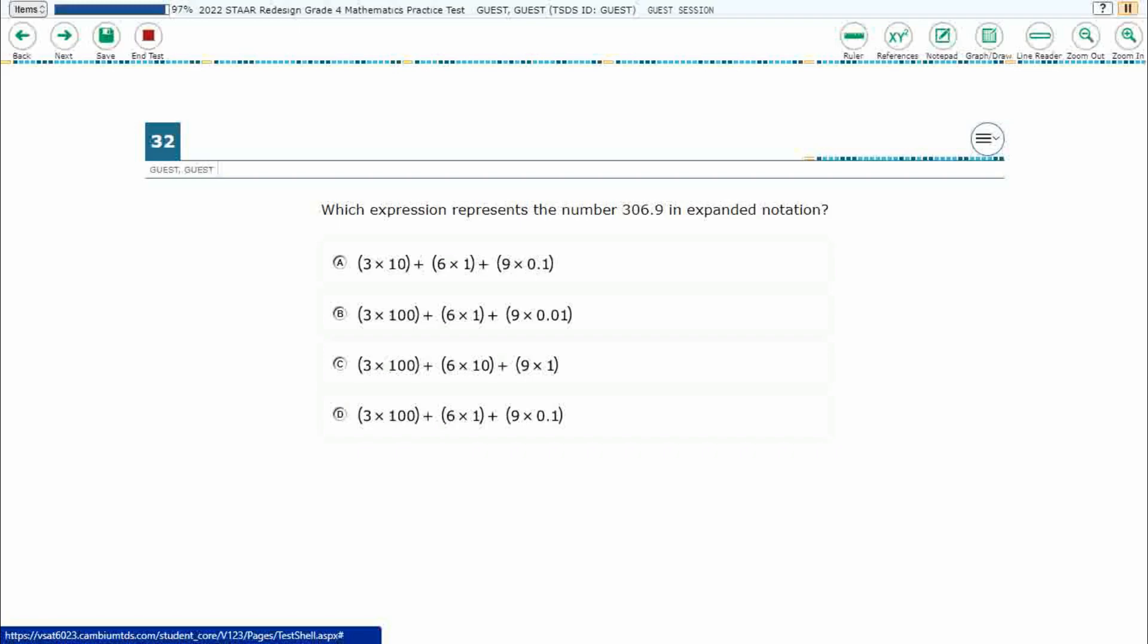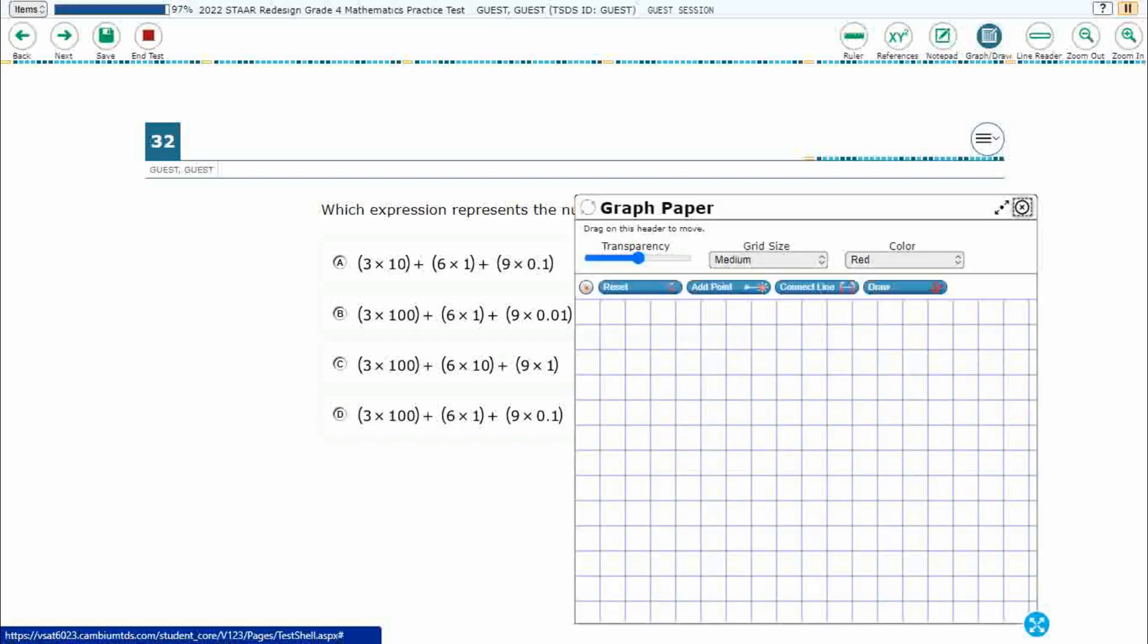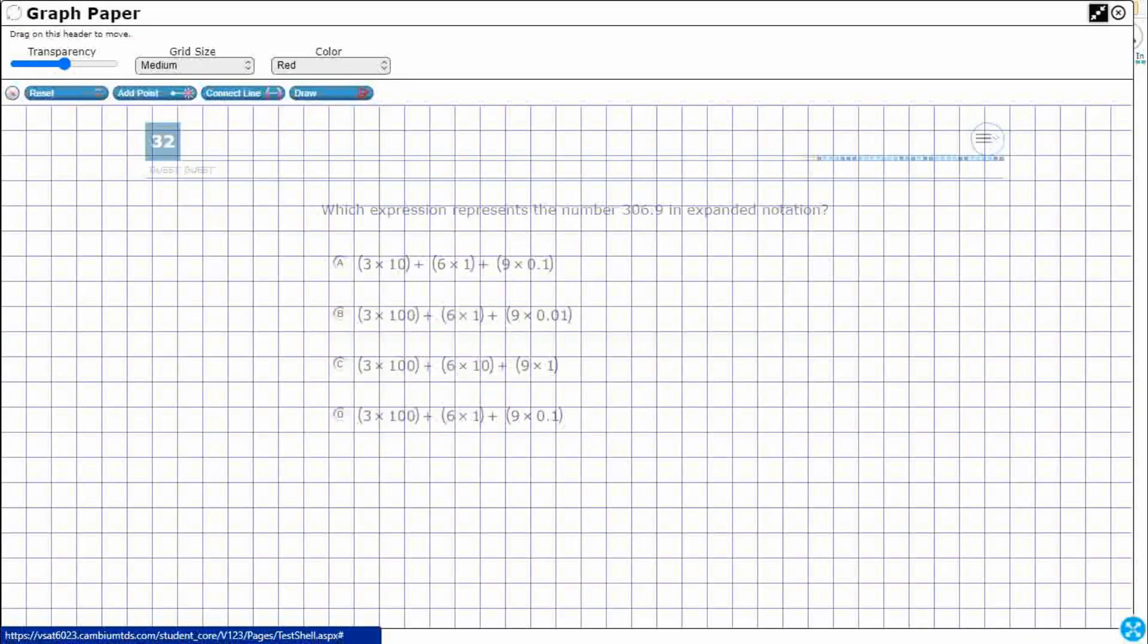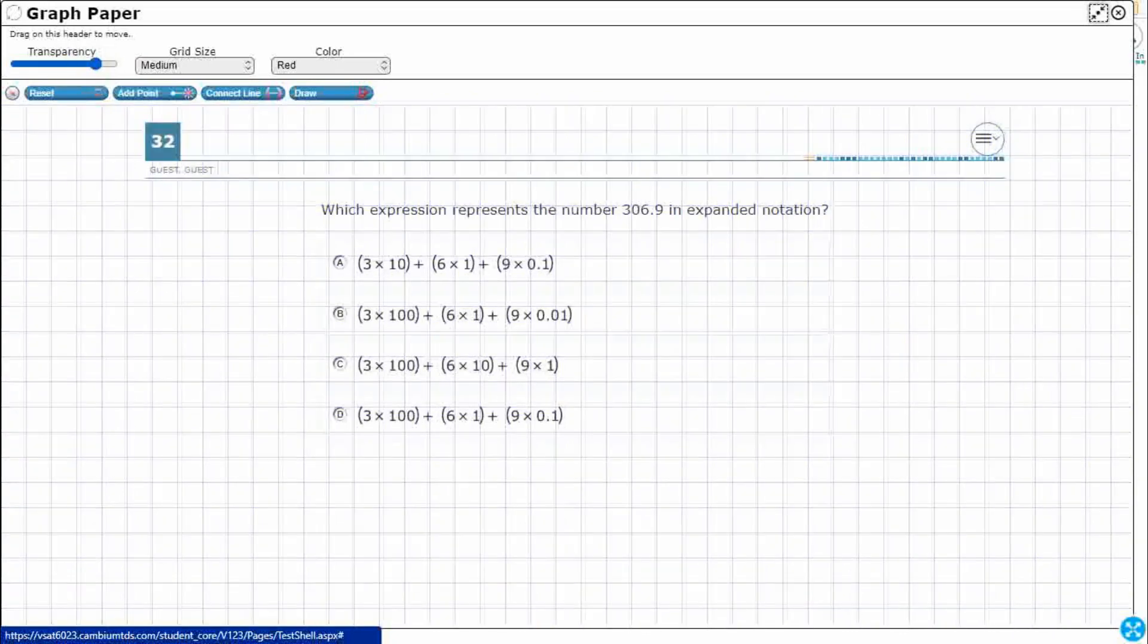So we need an expression to represent the number 306 and 9 tenths in expanded notation. Alright, so let's use this graph draw feature, expand it out a little bit, increase our transparency. So that's going to help us here.